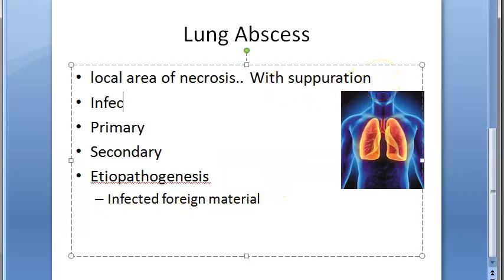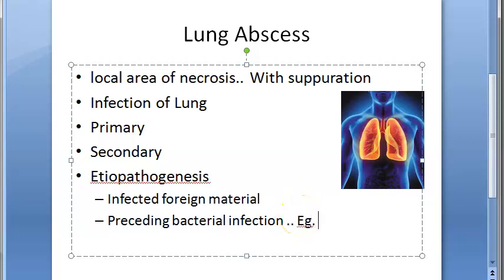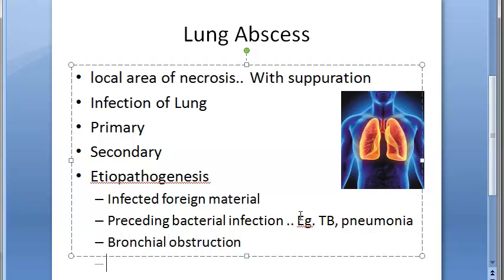The second etiology is preceding bacterial infection. A preceding bronchopneumonia in a patient may develop into a lung abscess. Infected conditions like tuberculosis, bronchopneumonia, bronchiectasis, and mycotic infections can result in lung abscess. So preceding bacterial infections like TB and bronchopneumonia can lead to lung abscess.